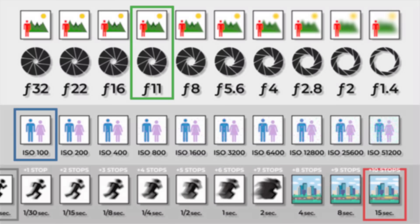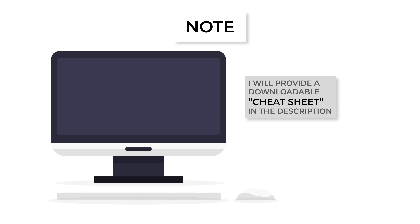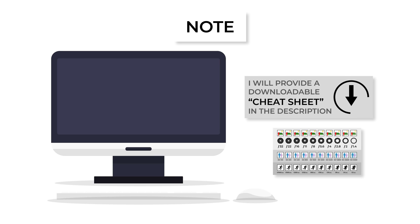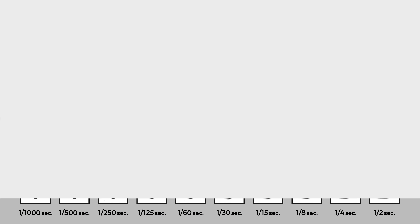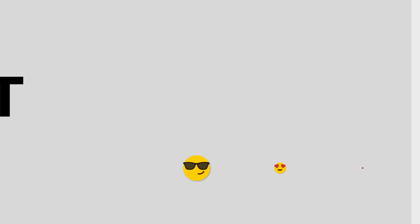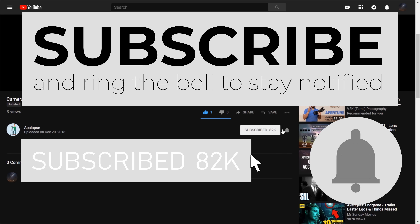So, in essence, learning equivalent exposures is really learning about the push-pull nature of camera settings. In the video description, I have included a PDF version of the full stop chart displayed earlier. Not only is this helpful for calculating equivalent exposures, but it also shows how manipulating camera settings changes the effects you see in your photos. Remember to rate the video, leave a comment with your feedback, and subscribe to and support the channel if desired. Thank you for watching.